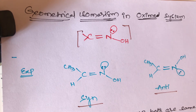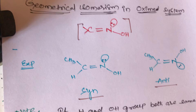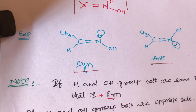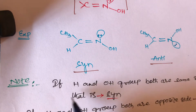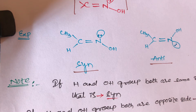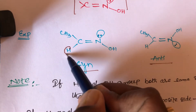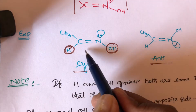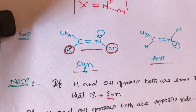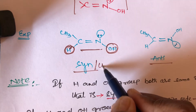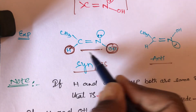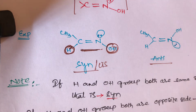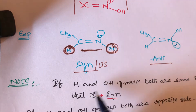To identify syn-oxime and anti-oxime, here is a simple trick. If hydrogen and OH groups are both on the same side, that is known as syn-oxime. Syn means similar to cis — hydrogen and OH group present on the same side, whether above or below the plane.